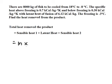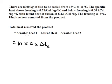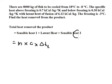The formula for sensible heat is: mass (m) multiplied by c, multiplied by delta T — that's the difference in temperature.